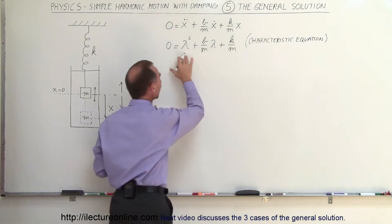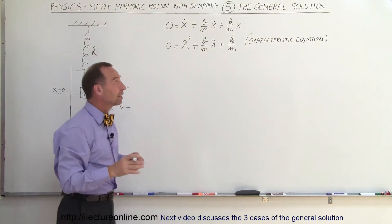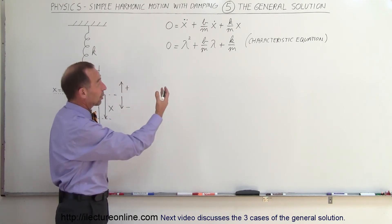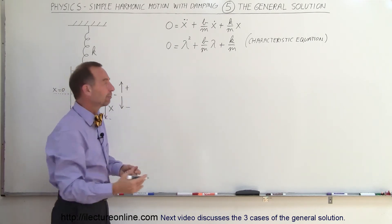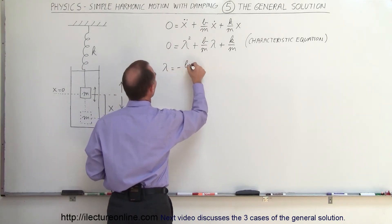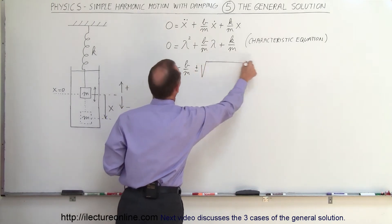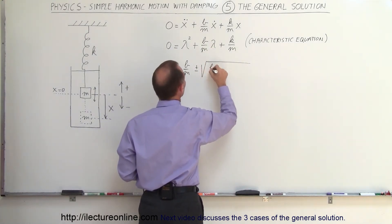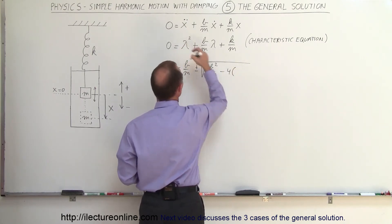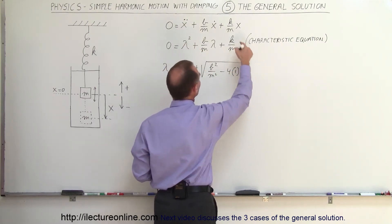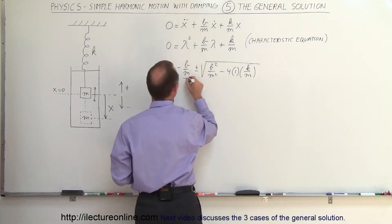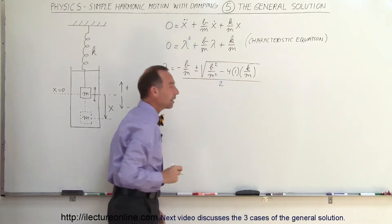Whatever lambda becomes in this equation, that will be the value for x, and that will then become the solution of the differential equation. This is simply a quadratic equation, so we use the quadratic formula to solve it. We have lambda is equal to minus b over m, plus and minus the square root of b squared divided by m squared, minus 4 times a — which is 1 — times c, which is k over m, all divided by 2 times a, which is simply 2.